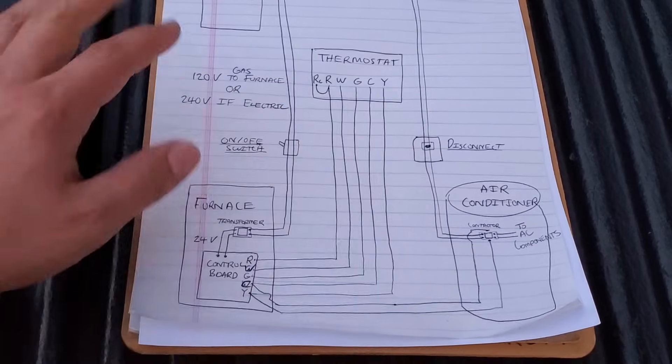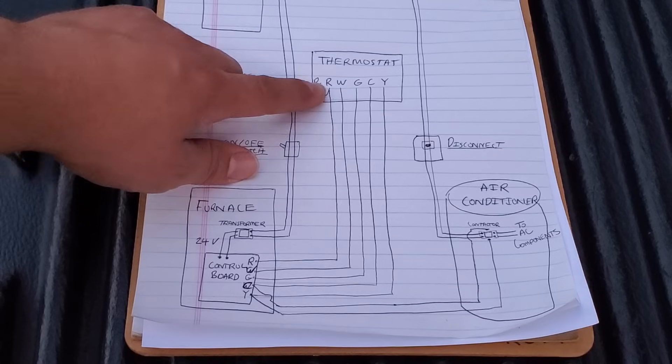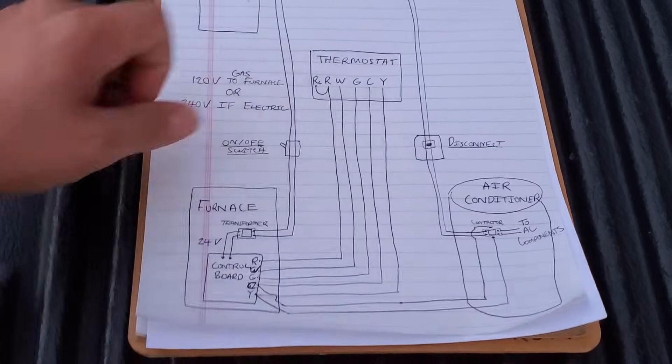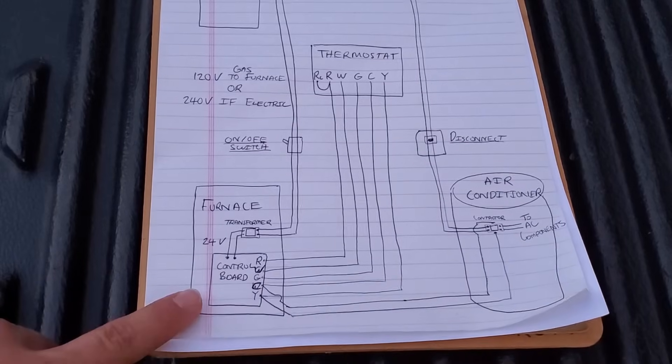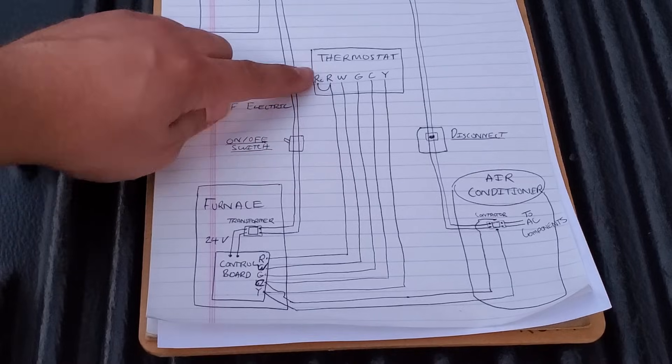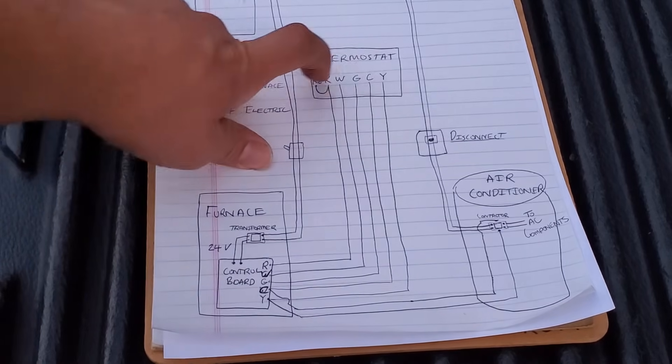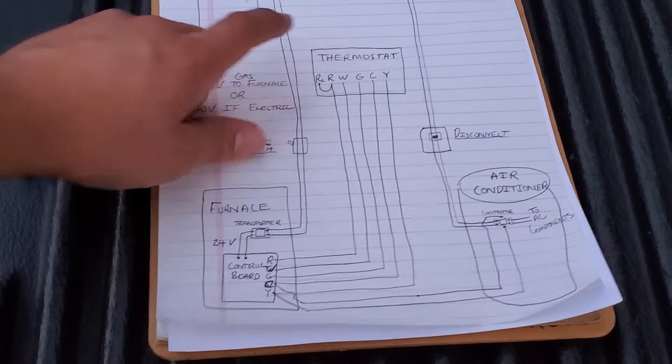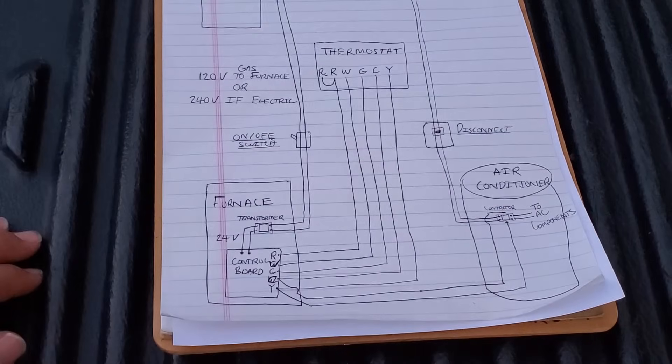Finally we have the Y terminal which is for air conditioning. Now when the thermostat applies power from the R to the Y, then that would bring on the outdoor condensing unit, but we also need the furnace fan to run. We already know that the G is the fan terminal, so during a call for cooling the thermostat will apply power from the R to the Y and the R to the G at the same time, bringing the furnace fan on and the outside unit on.